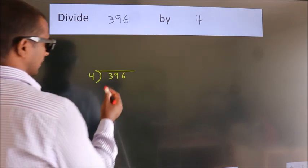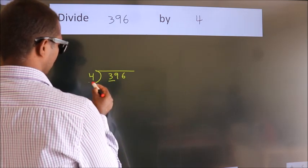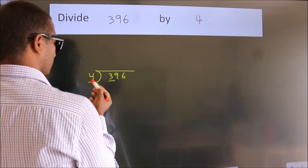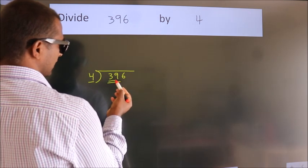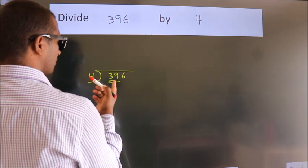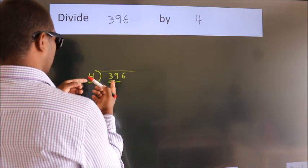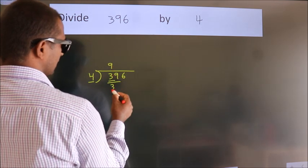Next, here we have 3, here 4. 3 is smaller than 4, so we should take 2 numbers: 39. A number close to 39 in 4 table is 4 nines 36.